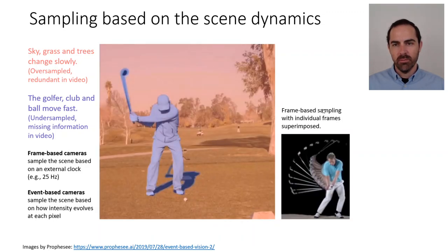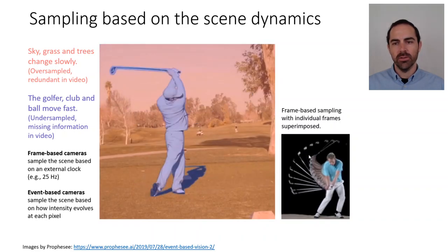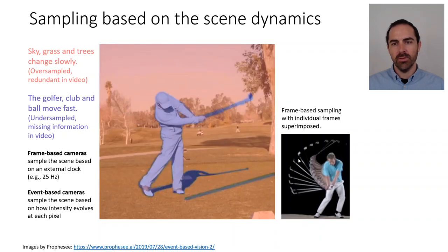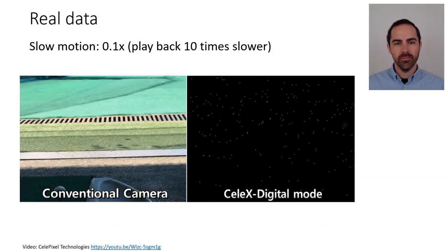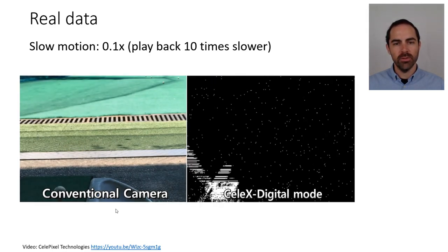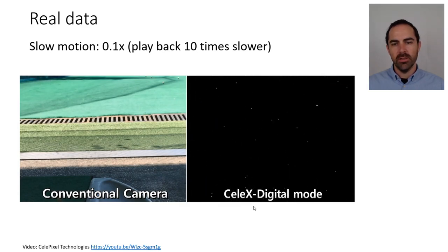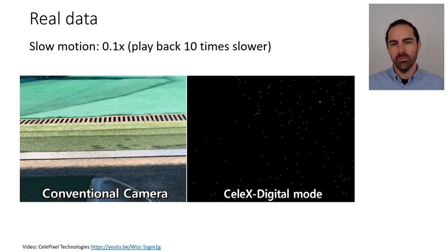Frame-based cameras sample the scene based on an external clock, such as 25 frames per second, whereas event-based cameras sample the scene based on how intensity evolves at each pixel — there is no external clock. Here is an example of frame-based sampling showing different snapshots where frames were acquired; if we superimpose all of them we see the individual frames, but we lose all the information in between. This doesn't happen with an event-based camera. This is the actual output from an event camera in slow motion — a CELX camera. On the left we see the output of a standard camera, and on the right the pixels that are mostly triggering are those that move due to moving edges: the club, the ball, and the shadows.